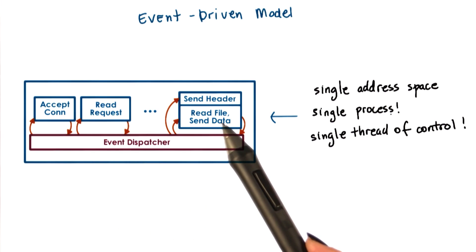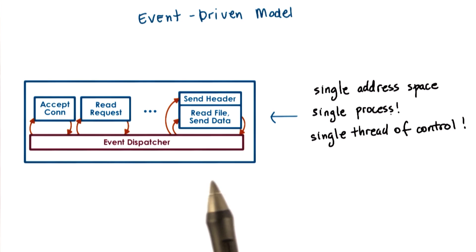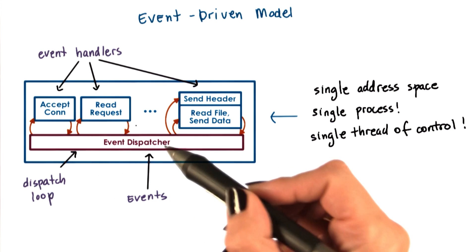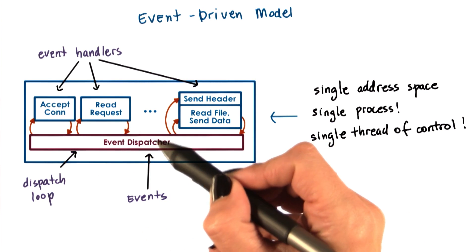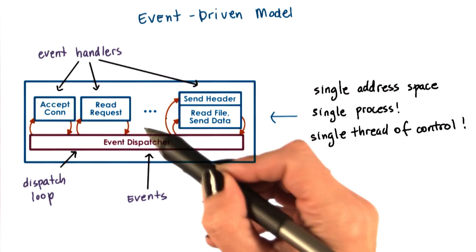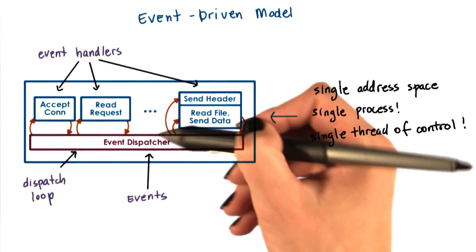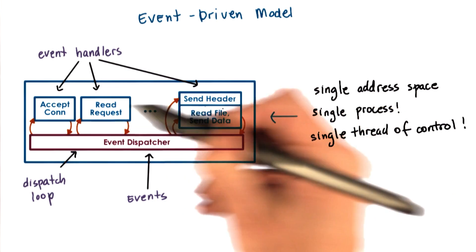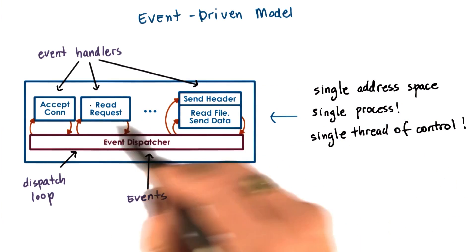Here is the illustration of this model, taken from Vivek Pai's flash paper. The main part of the process is an event dispatcher that continuously, in a loop, looks for incoming events, and then based on those events, invokes one or more of the registered handlers.